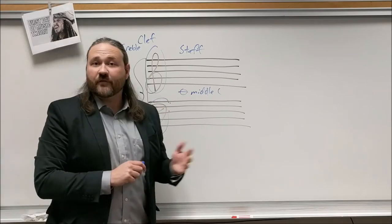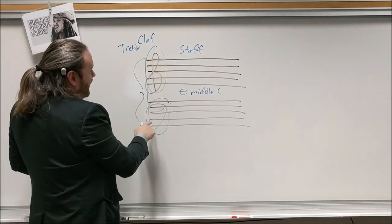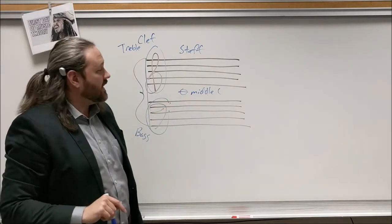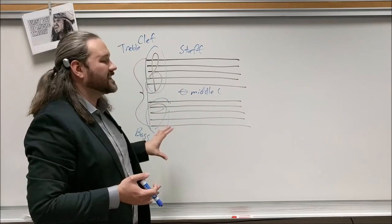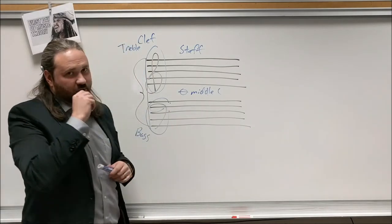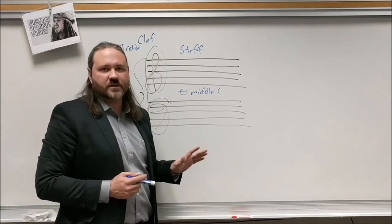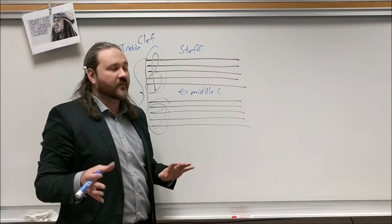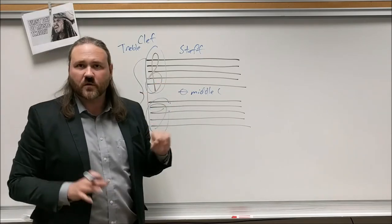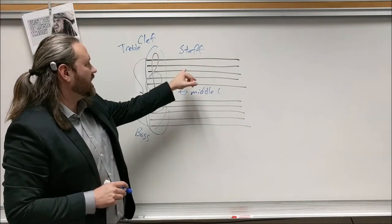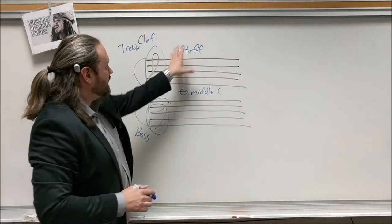We commonly call the treble clef the G clef because it swirls around and lands on the G line, and the bass clef the F clef because it swirls around the F line. These are notations of relative pitch, not necessarily absolute pitch — it depends on what you tune to. Tuning to A440 is standard for most instruments today, making it pretty close to absolute notation of pitch.